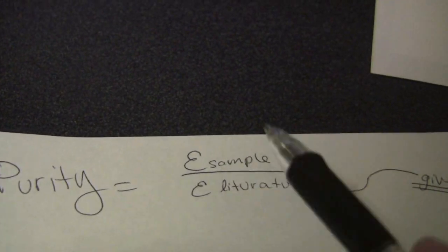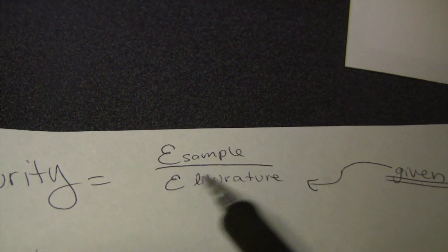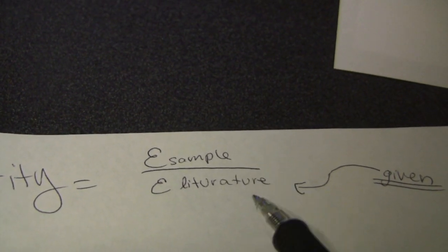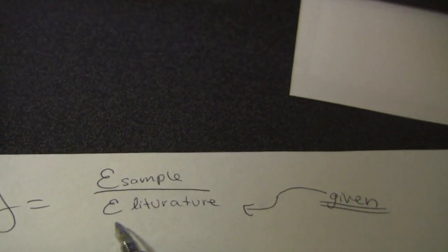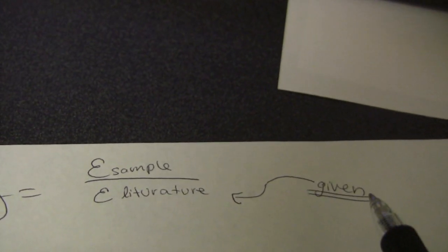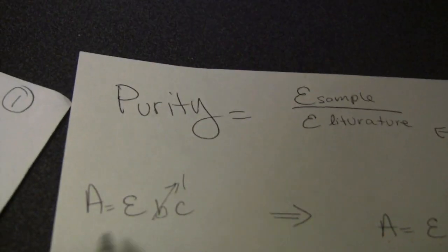Since we know purity equals the molar extinction coefficient of the sample over the molar extinction of the literature, and we know that the literature value of the molar extinction coefficient is given to us, then we can use this formula.